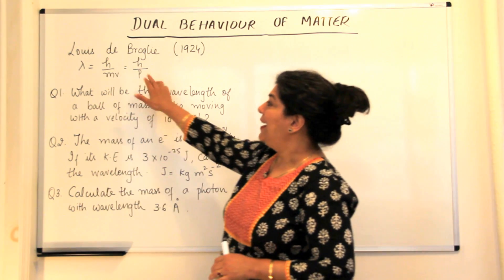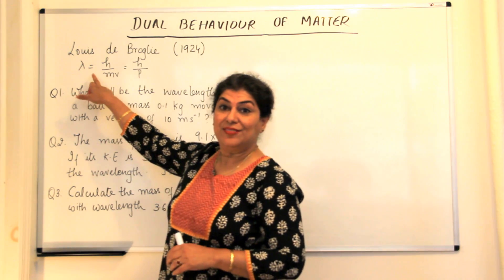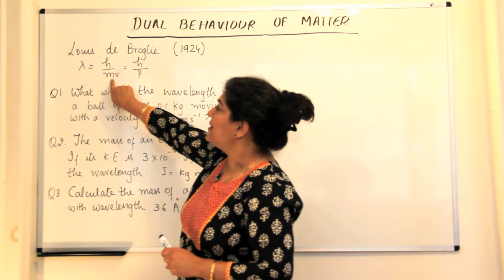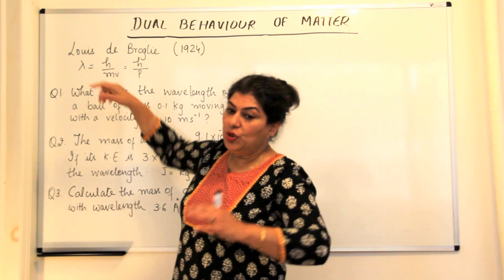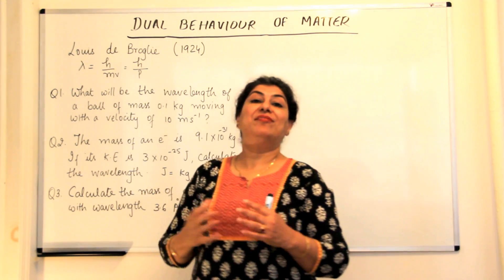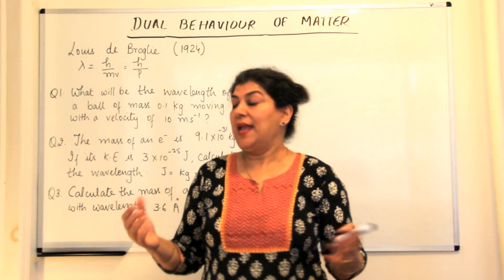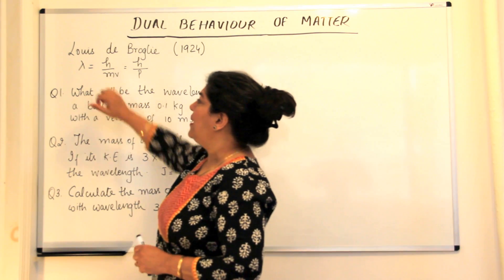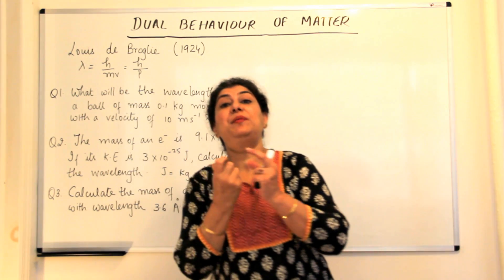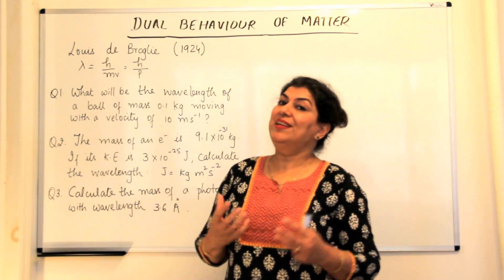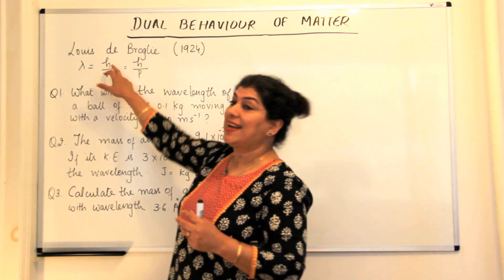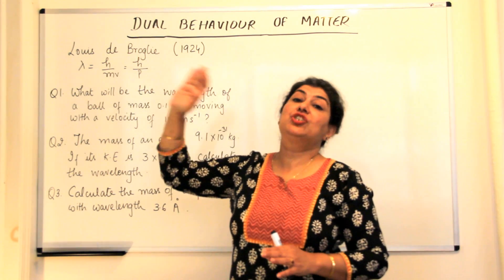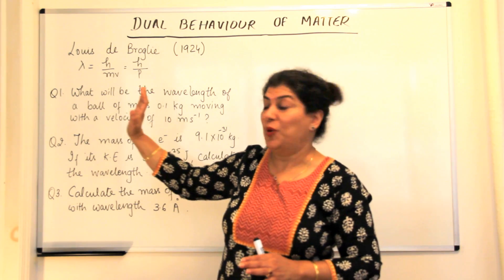The reason for that can be explained in this formula itself. Do you see that the mass is in the denominator? Usually macroscopic objects have very large masses and the mass is very large, therefore the wavelength is extremely small. And the Planck's constant has a value of 10 to the power minus 34 which is itself very very small.